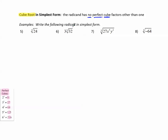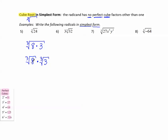Number 5: cube root of 24. The index is 3. 24 is not a perfect cube, but 8 divides into 24 evenly, so we break this up as the cube root of 8 times 3. The cube root of 8 is 2 (since 2 cubed is 8), and we cannot take the cube root of 3 evenly. Since 3 has no perfect cube factors, the final answer in simplest form is 2∛3.